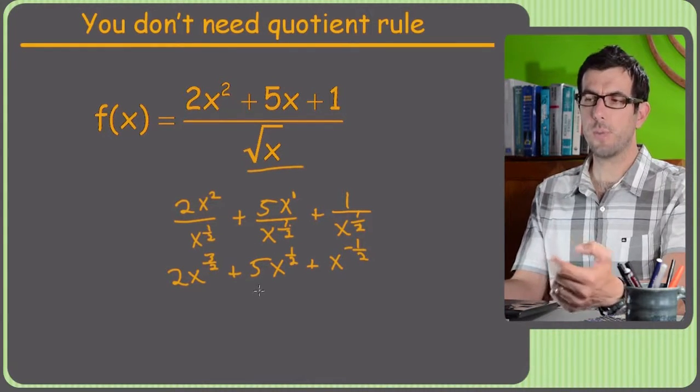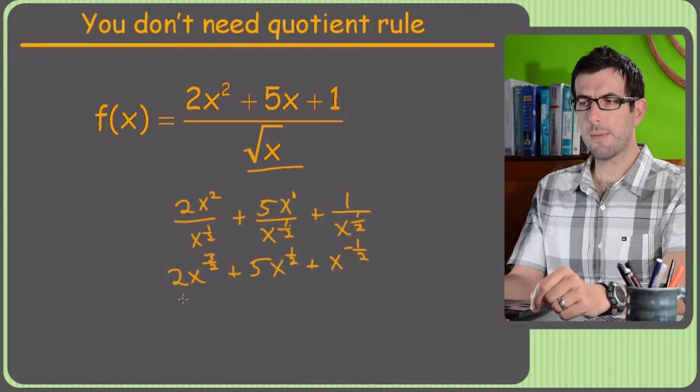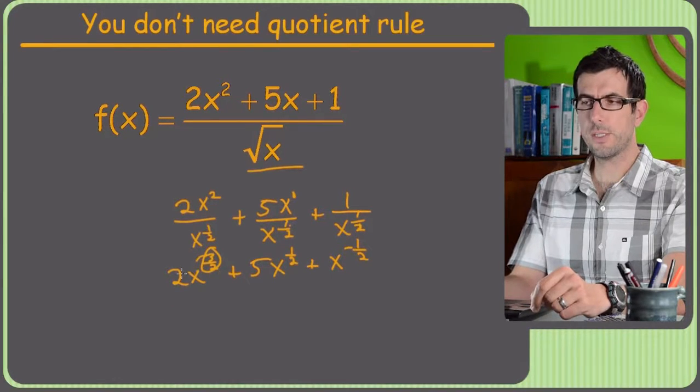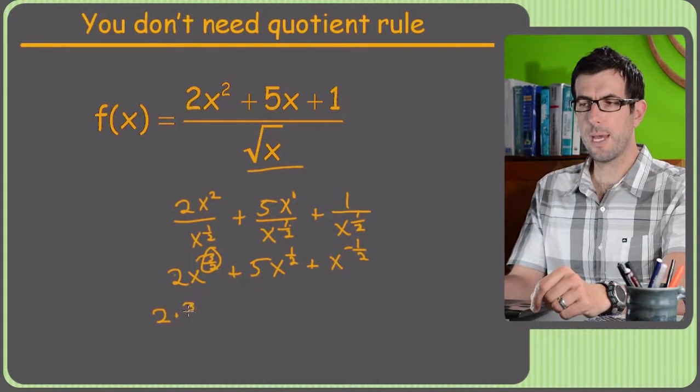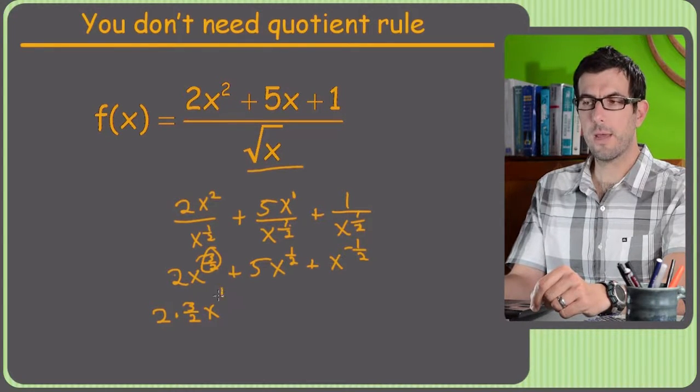Again, negative exponents, we can do the power rule. So 2 times 3, we just take the old power, move it out front, so that's 2 times 3 halves is 6 halves. And I'll just write it out, 2 times 3 halves, x to the new power is 1 half.